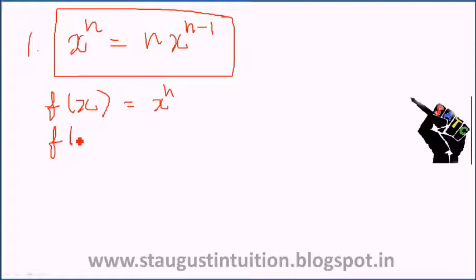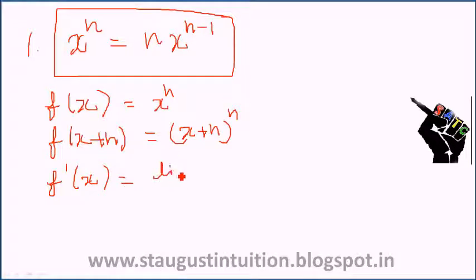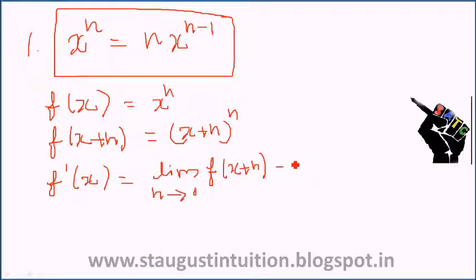Then, what is f(x + h)? It is very simple — that is (x + h) all raised to n. According to the formula, f prime of x equals the limit as h tends to 0 of f(x + h) minus f(x) divided by h.